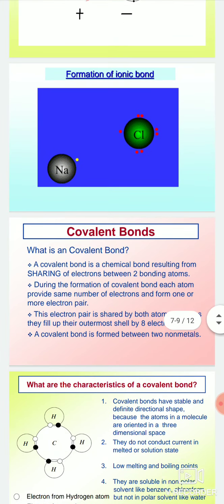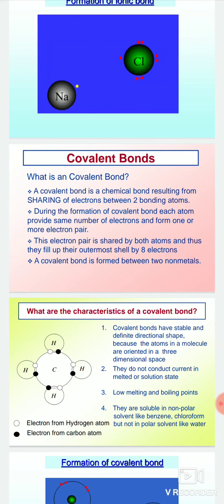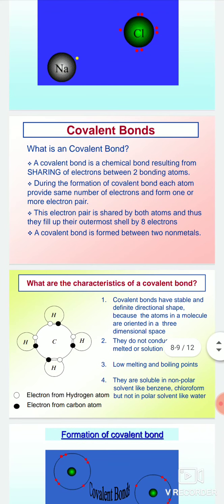What is a covalent bond? A covalent bond is a chemical bond resulting from sharing of electrons between two bonding atoms. During bond formation, each atom provides the same number of electrons and forms one or more electron pairs. A covalent bond is formed between two non-metals.